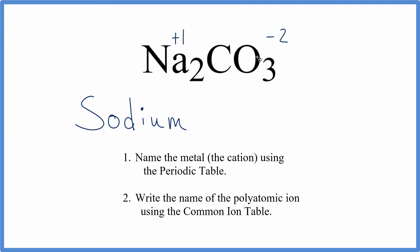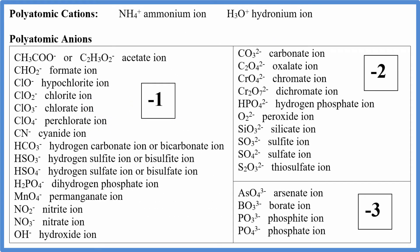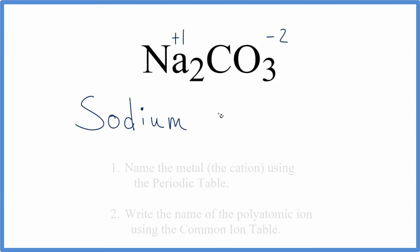We can go to the common ion table and look up the name for CO₃ two minus. As we look in the two minus category, we see CO₃ two minus is the carbonate ion. So we go back and write carbonate.